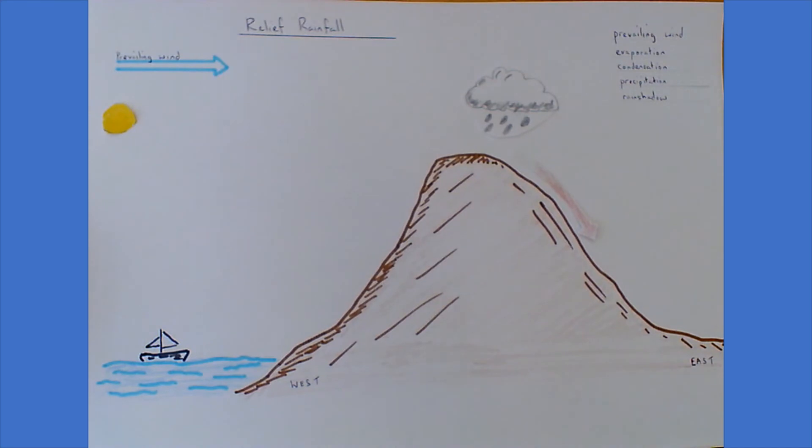Once the rain cloud crosses the peak of the mountain, it will start to descend down the eastern side. As the air sinks, it becomes warmer at a rate of 0.6 degrees per 100 meters, and that means it is able to retain more moisture within the atmosphere, so it's less likely to rain.